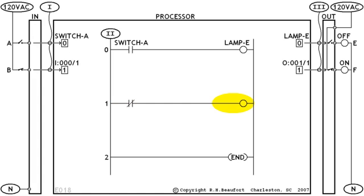We'll need an address for this instruction. And let's say that we decide to use the address O:001/1 for the new output device lamp F that we just wired up a few minutes ago. And the address for this instruction will be switch A again, not our new switch B the way you might have guessed.